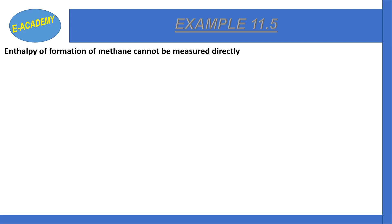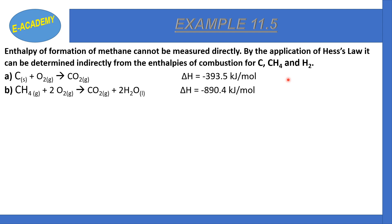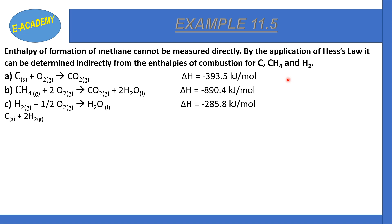Example 11.5: The enthalpy of formation of methane cannot be measured directly. By application of Hess's Law it can be determined indirectly from the enthalpy of combustion for carbon, methane, and hydrogen. Reaction A: C + O₂ → CO₂, delta H = −393.5 kJ per mole. Reaction C: H₂ + ½O₂ → H₂O, delta H = −285.8 kJ per mole. We need to find delta H for: C + 2H₂ → CH₄.